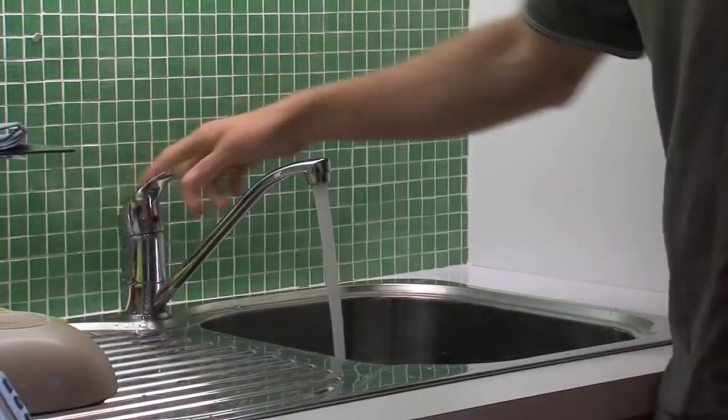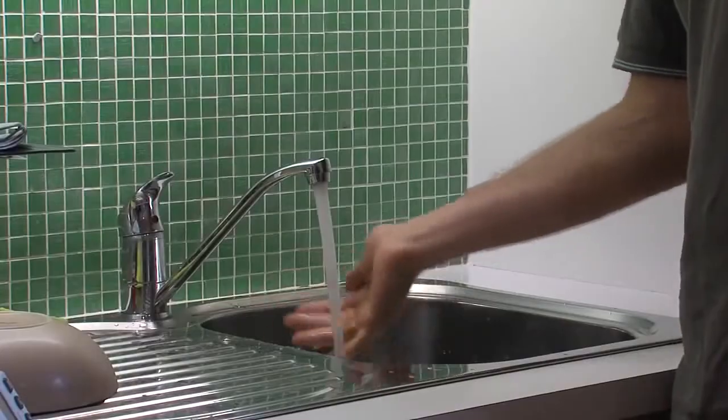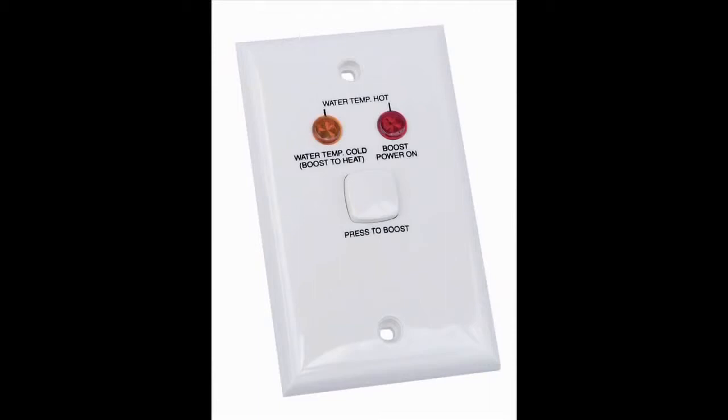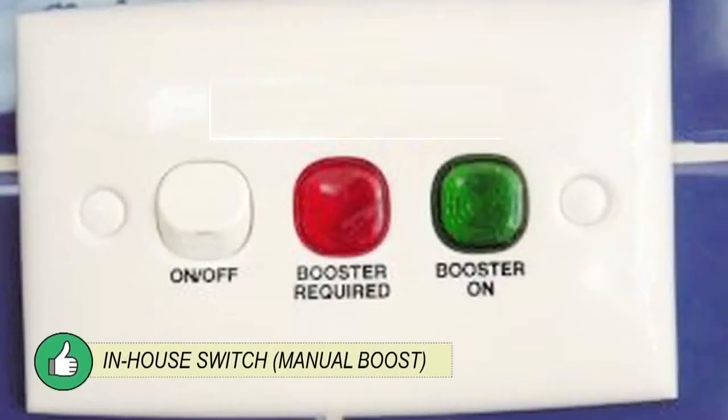The solar hot water system will require boosting at some times of the year. Electric boosters use a lot of power, so make sure the booster is controlled by a manual in-house switch. This switch should include a light to indicate when on.